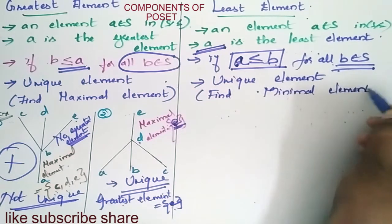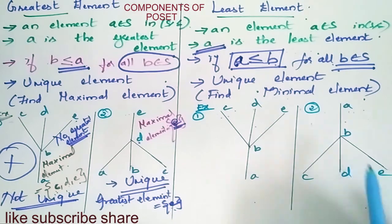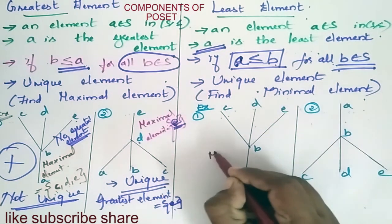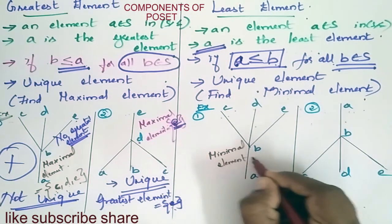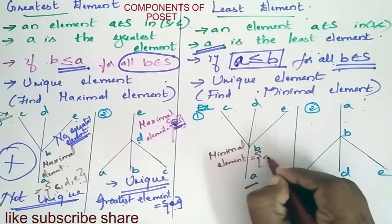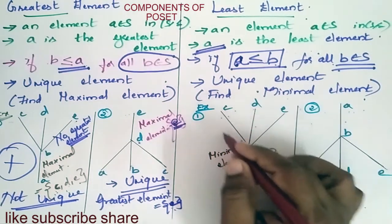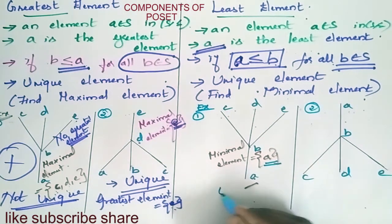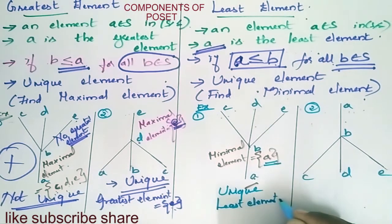Minimal element: in the first Hasse diagram, the minimal element is the bottommost element, which is A. No other element is lesser than A in this Hasse diagram according to the relationship, so A remains unique. Therefore, the least element in this Hasse diagram is A.